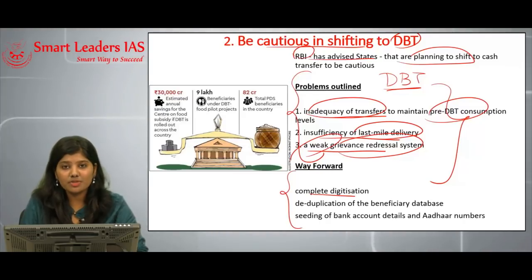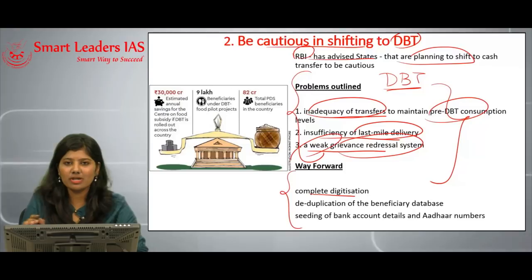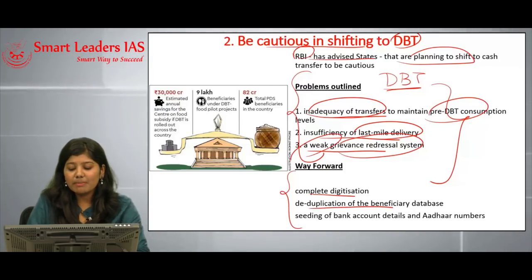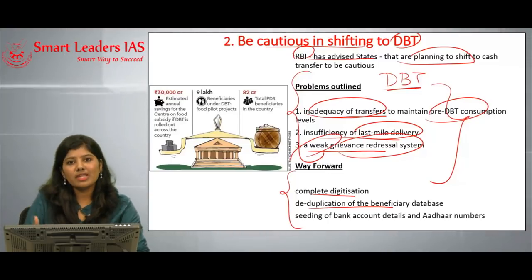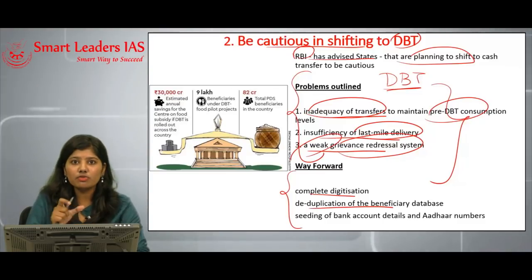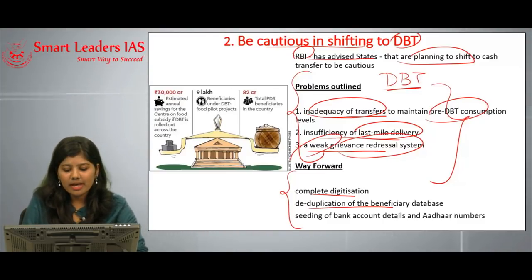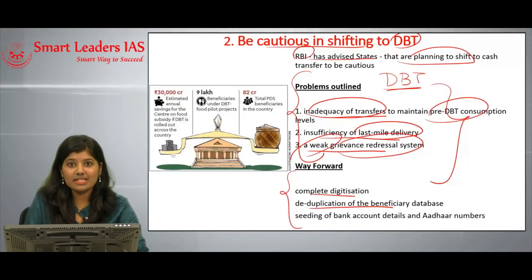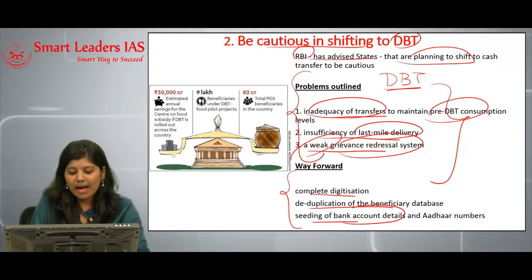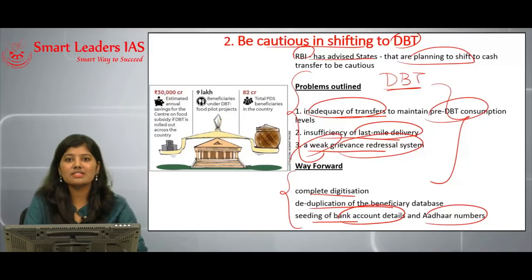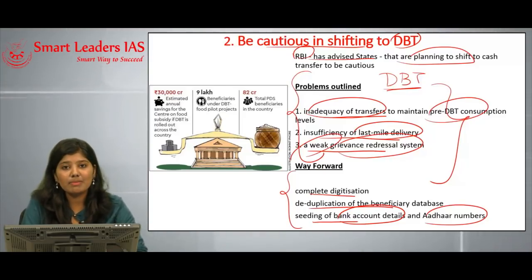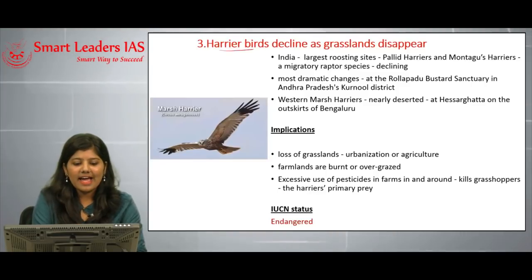The way forward includes complete digitization of all data as a major step to curb corruption in both the PDS and DBT systems. Deduplication of beneficiary databases is also essential, since some people are claiming multiple entitlements and restricting others from receiving what they deserve. Ghost beneficiaries must be eliminated. Additionally, seeding of bank account details and Aadhaar numbers into the database should be done to ensure DBT reaches every entitled household.